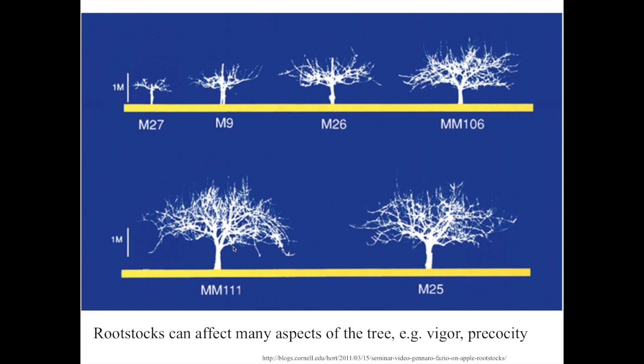The rootstock can affect many aspects of the tree. The most commonly considered effect is vigor. The illustration here shows a range of different rootstocks where all trees are the same age with the same scion variety, but you can see a range of vigor going from the most dwarfing M27 through to more vigorous ones. Typically M9, the second most dwarfing, is the commercial standard. This range of rootstocks enables the grower to choose a tree vigor more suitable for their own growing environment.